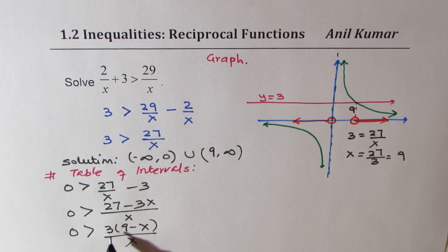So we have a rational function on the right side. We want that to be less than 0. So we'll analyze this particular function now.